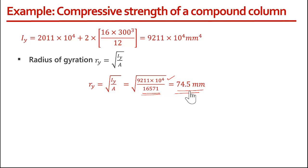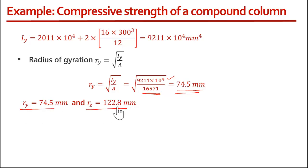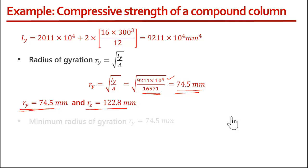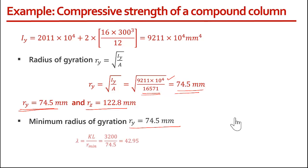Now we need to find which radius of gyration is minimum, because we need the maximum effective slenderness ratio. The radius of gyration along the Y axis is 74 mm and along the Z axis is approximately 122–123 mm. So the minimum radius of gyration is rY = 74.5 mm.